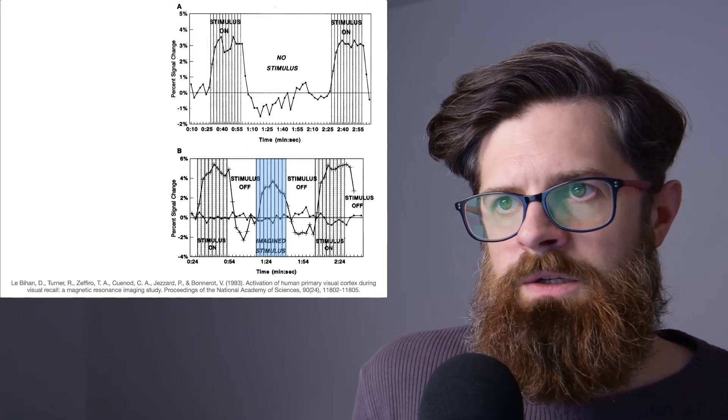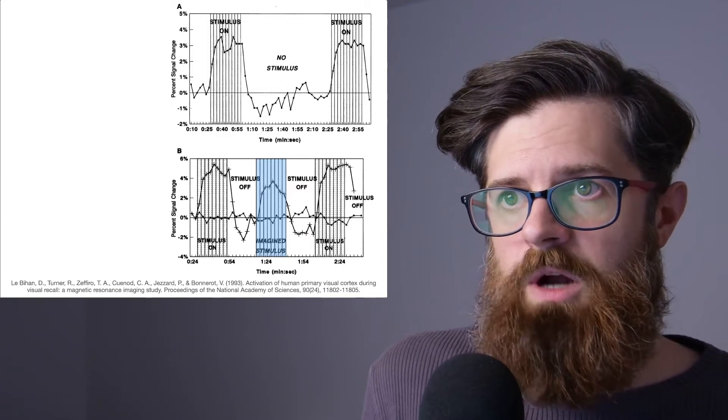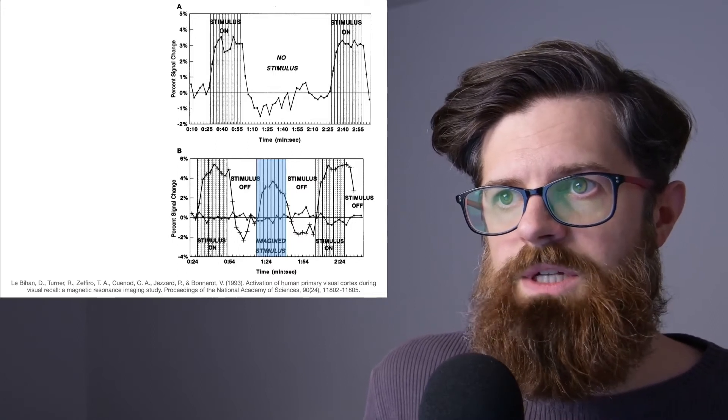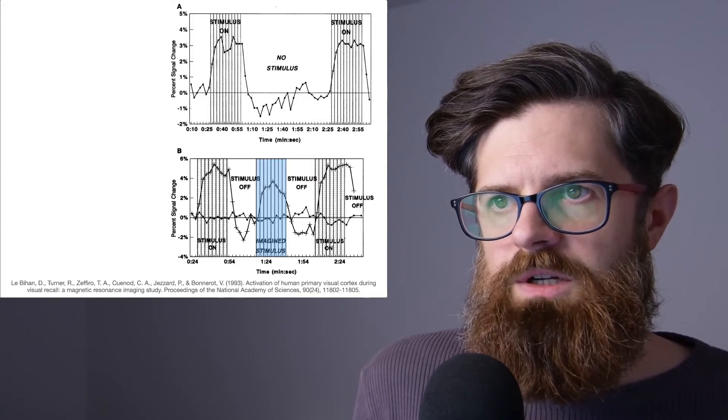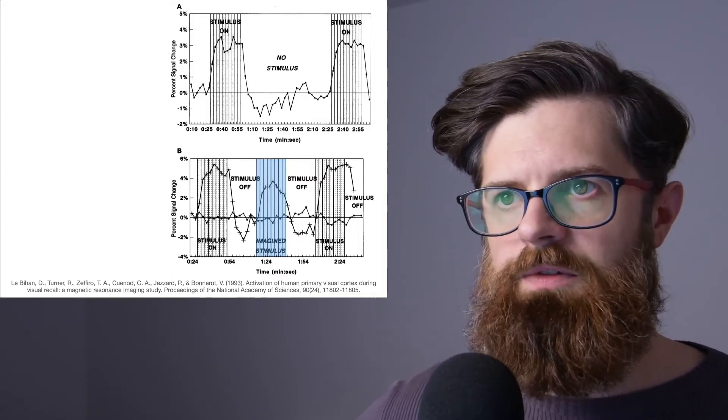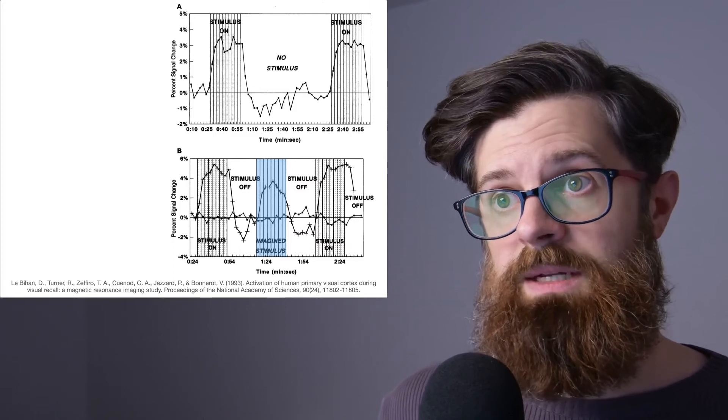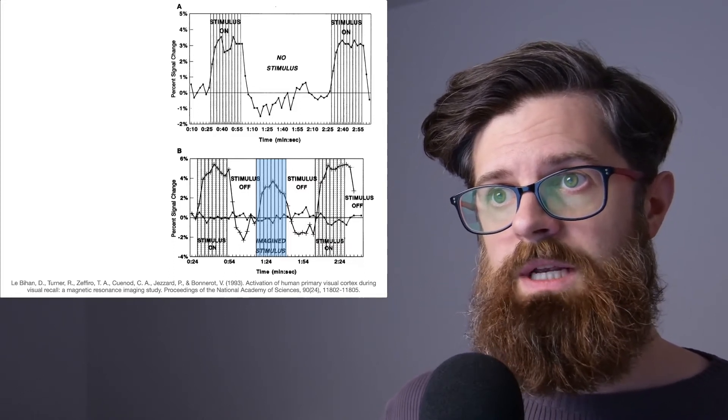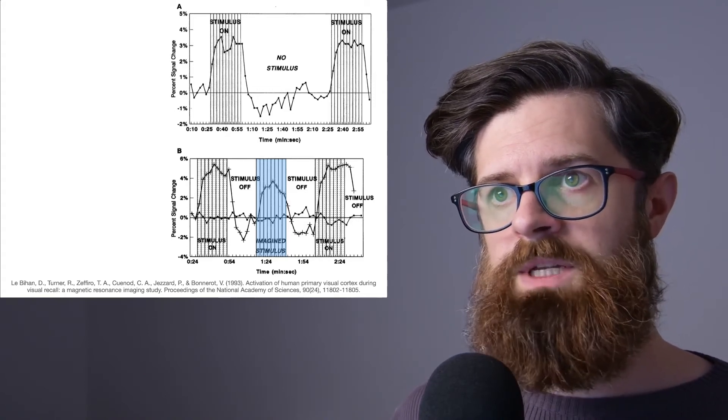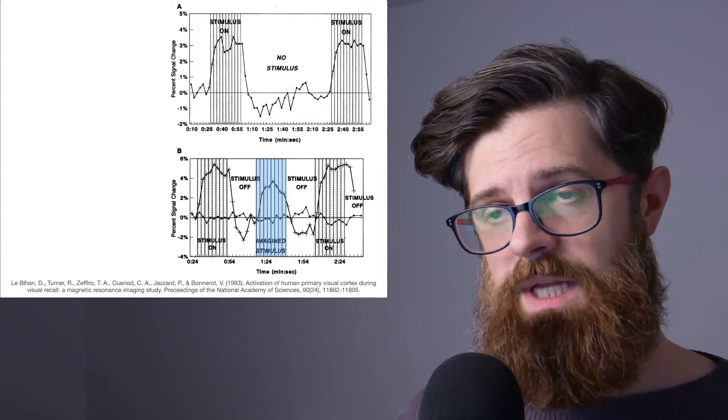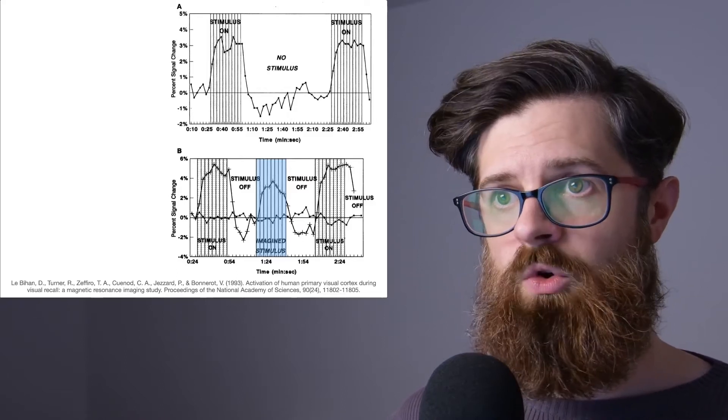Now if we look at the top graph, what we can see is that for the first part of the experiment nothing much was really going on and the activity hovers around zero percent. The shaded region here represented by a bunch of vertical lines represents the point at which a visual stimulus was presented, and what we can see is that the signal change increases.